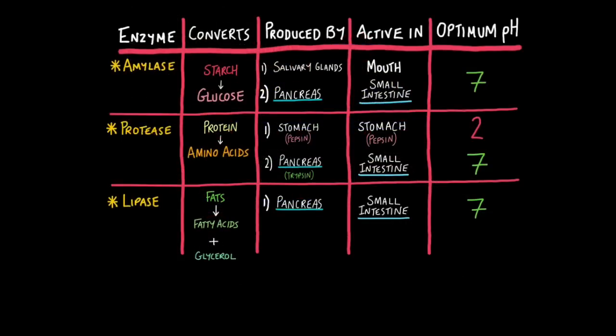Understanding the roles and activity of the enzymes is critically important for this exam. Here's a summary table to help you. Remember, amylase converts starch into glucose. It is produced in two places, the salivary glands and the pancreas. Where it's produced by the salivary glands, it's active in the mouth. Where it's produced by the pancreas, it's active in the small intestine. Amylase works best in neutral conditions, in other words, pH 7.